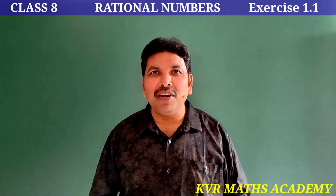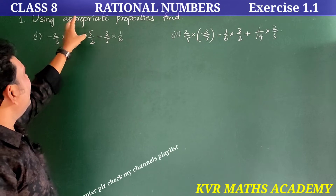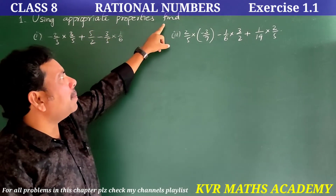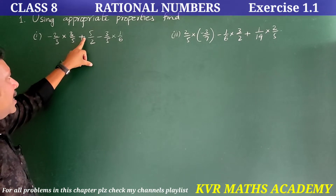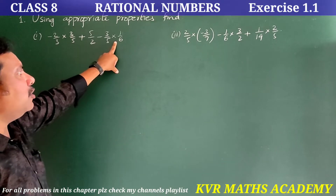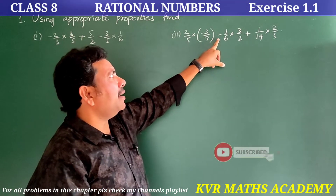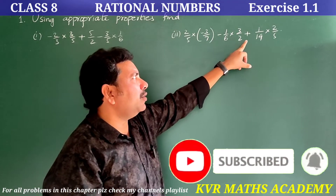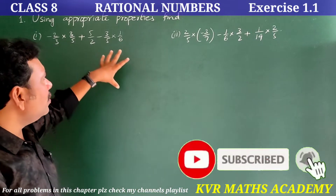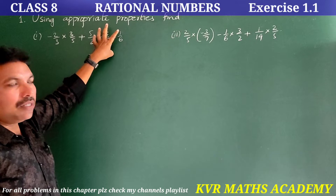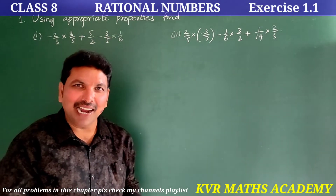This is the first part of the video, Exercise 1.1. First question: using appropriate properties, find the value. First one: minus 2 by 3 into 3 by 5, plus 5 by 2, minus 3 by 5 into 1 by 6. Second one: 2 by 5 into minus 3 by 7, minus 1 by 6 into 3 by 2, plus 1 by 14 into 2 by 5.